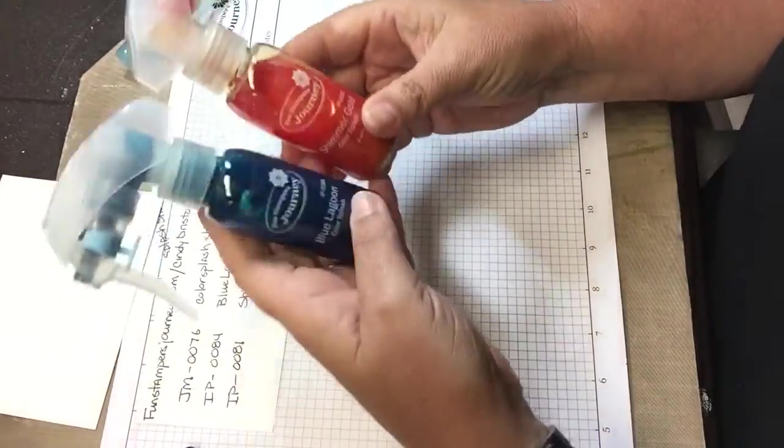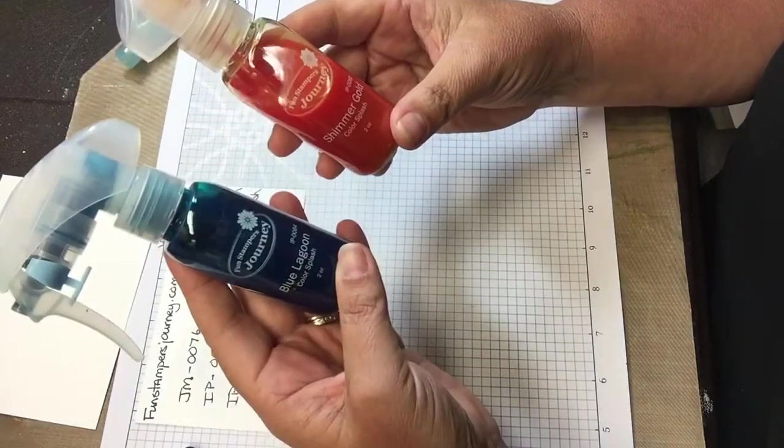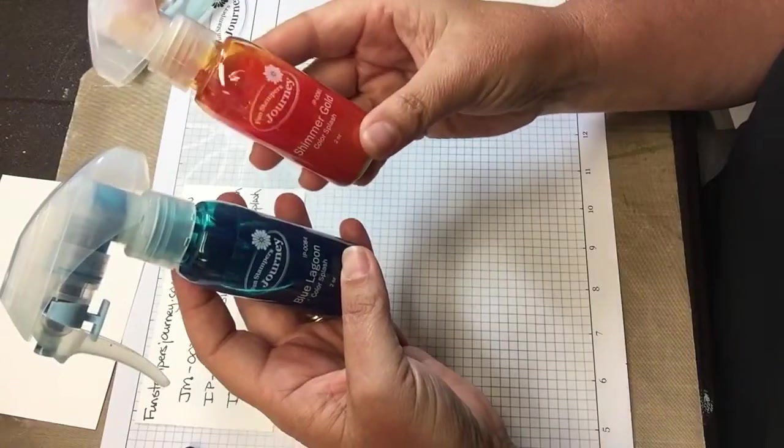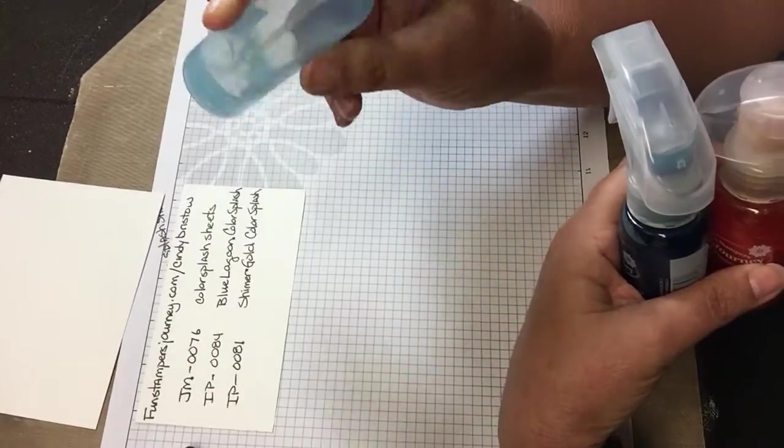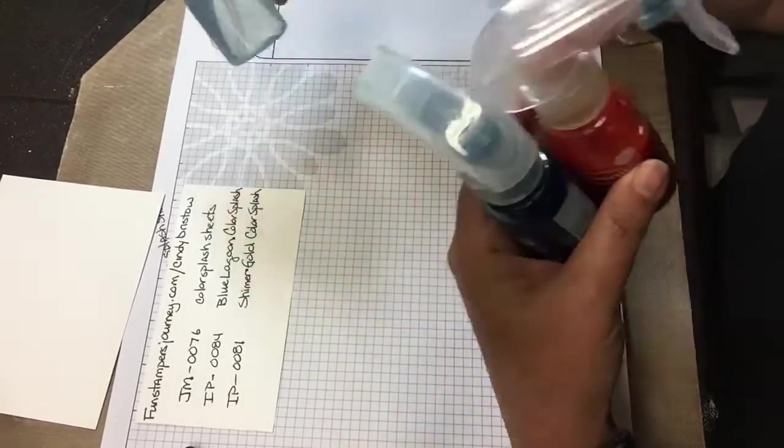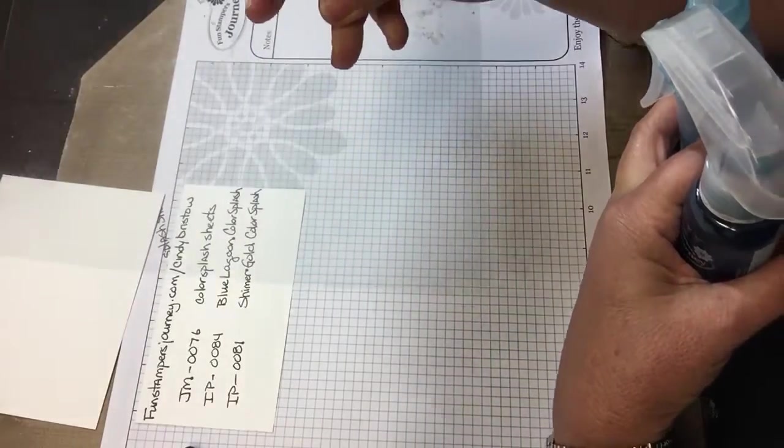The next thing I used are the fun stampers journey color splashes. I used it in blue lagoon and in shimmer gold, and the final thing is a water bottle that you use.